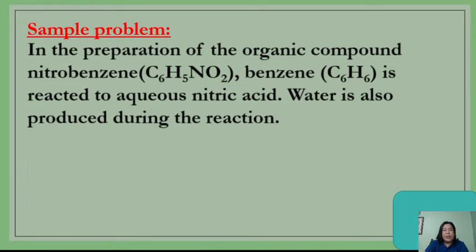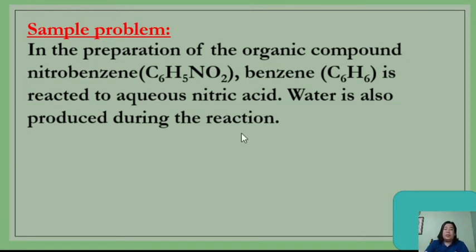In our first sample problem, this is the word equation we're going to use in the preparation of the organic compound nitrobenzene with chemical formula C6H5NO2. Benzene, with chemical formula C6H6, is reacted to aqueous nitric acid, and water is also produced during the reaction. In every stoichiometric calculation, you need to first have your balanced equation.